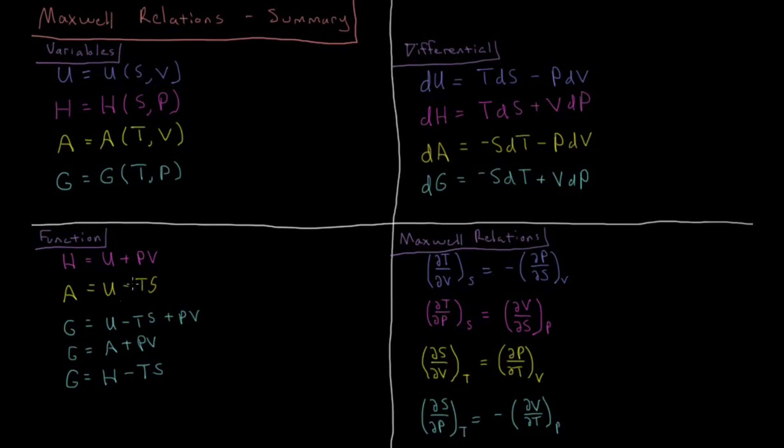If we work out the differential starting from the differential of internal energy, we have dU equals TdS minus PdV. TdS is equal to heat, minus PdV is equal to work. Then we do a Legendre transformation based off of these differentials as we showed in the previous video, and you can arrive at these differential forms for all these other thermodynamic state functions.